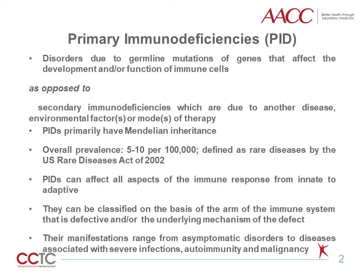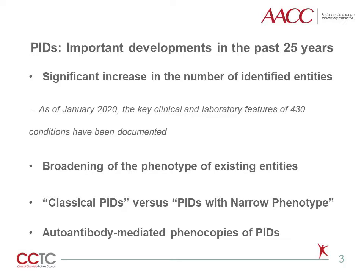There are different approaches to classifying PIDs. Here, they are classified on the basis of the affected arms of the immune system and or the underlying mechanism of the observed defects. Clinically, PIDs can have a range of manifestations, from asymptomatic to those associated with a combination of severe infections, autoimmunity, and malignancy. Our understanding of PIDs has undergone major developments within the past 25 years.